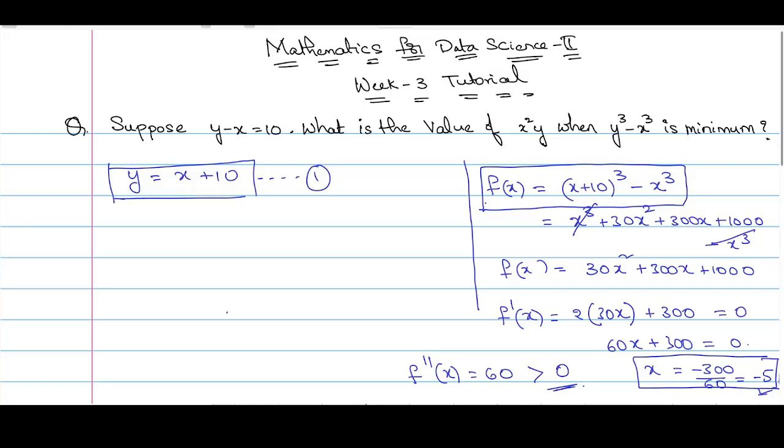As we got the value of x as minus 5, substitute that value in equation 1. Then we will get the value of y. y is equal to minus 5 plus 10, which is equal to 5. Hence, we got the value of x as minus 5 and y as 5.